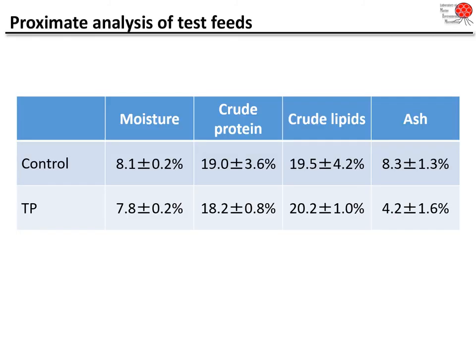Here are the results. First, the proximate analysis of the test diets. Comparing control and TP diet: moisture, protein, crude lipid, and ash values show slight fluctuations — for example in ash — but no significant differences were found. From the viewpoint of basic nutritional content, we successfully prepared control and TP diets of equivalent quality.